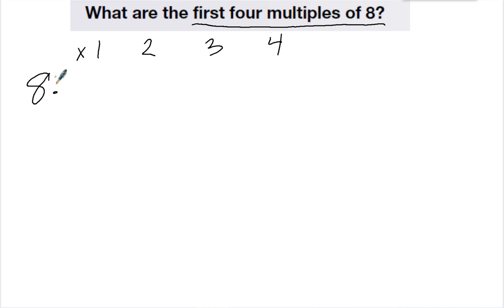So the first 4 multiples of 8 are 8 times 1 is 8, 8 times 2 is 16, 8 times 3 is 24, and 8 times 4 is 32. These are the multiples of 8. Now when I think multiples, I think multiply, which means I'm getting bigger.